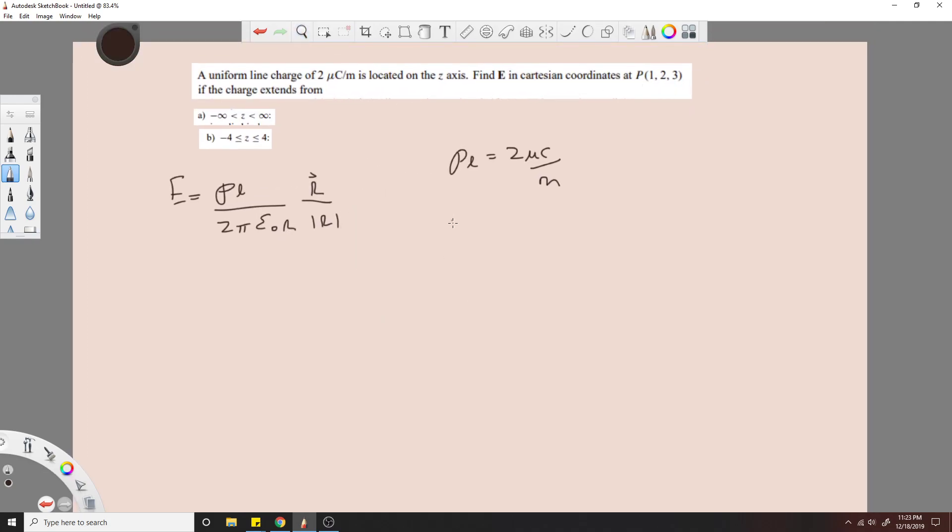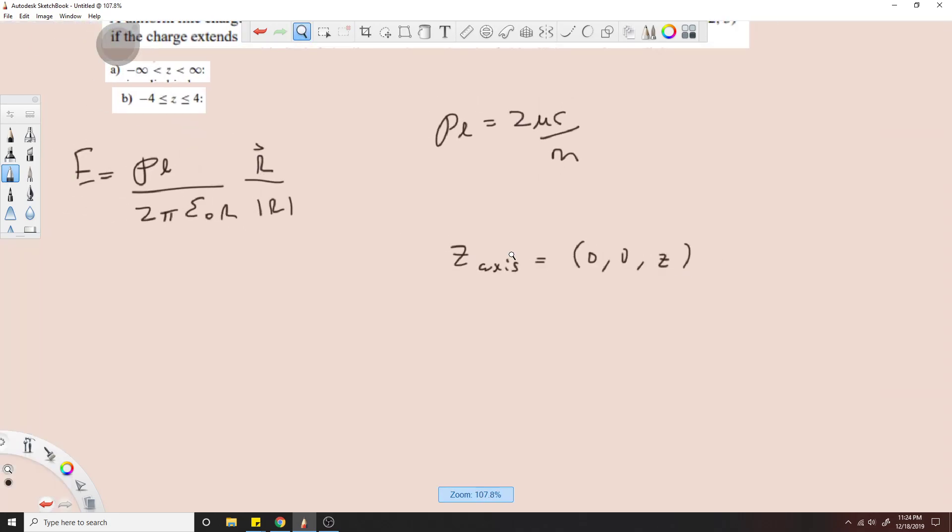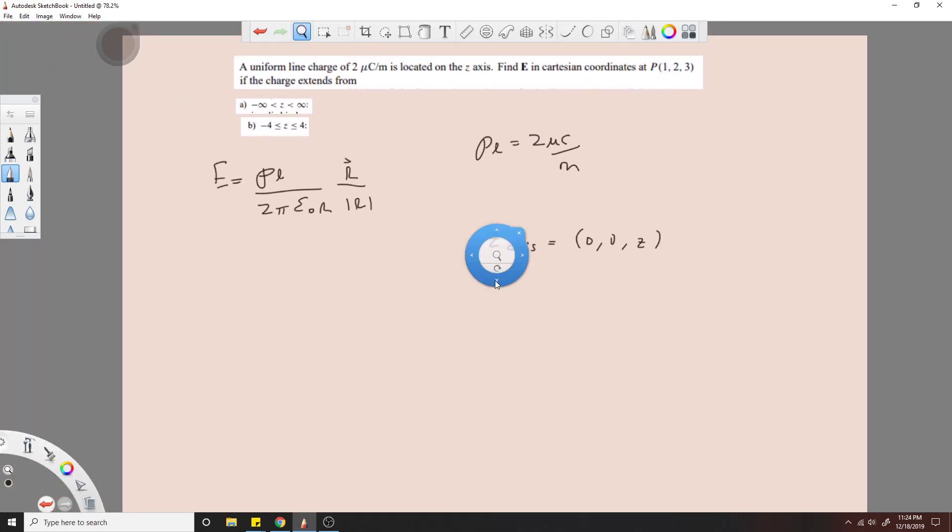For this, we have our point P, and we know the z-axis is 0, 0, and all z's, right? So we need to find an R, we'll call it R P z, where that's just the point P and z, and we'll take P to be the first one, 1, 2, 3, subtract by this z-axis here.